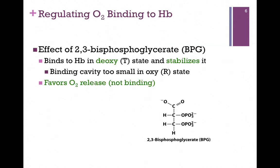Let's look at another means of regulating binding of oxygen to hemoglobin — by the molecule bisphosphoglycerate. The structure is illustrated at the bottom of the slide, but it's not important that you remember the structure. Bisphosphoglycerate binds to hemoglobin in its deoxy state — the T or tense state — which has a lowered affinity for oxygen binding. It binds to the T state and stabilizes it, so more of the molecules of hemoglobin are in the T state, so less oxygen is bound and more is released.